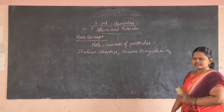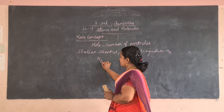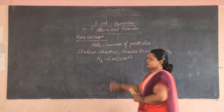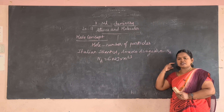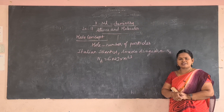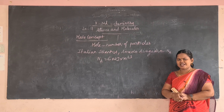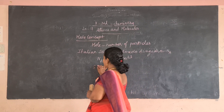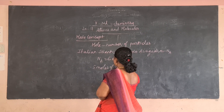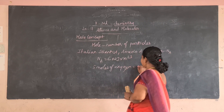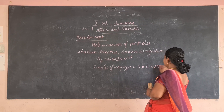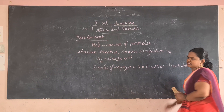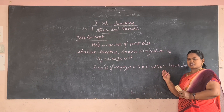Avogadro gave a value represented by the symbol NA to represent the number of particles present in the carbon-12 isotope. NA is the Avogadro number: NA = 6.023 × 10²³. For example, 5 moles of oxygen equals 5 × 6.023 × 10²³ particles or molecules of oxygen present in that substance.